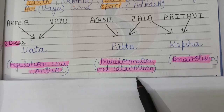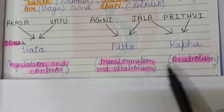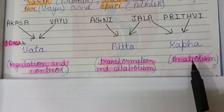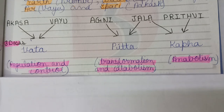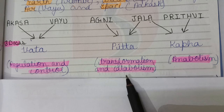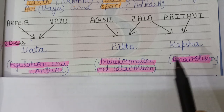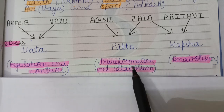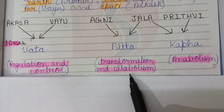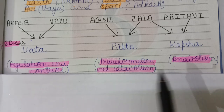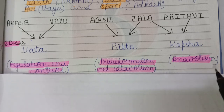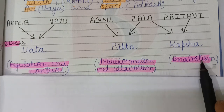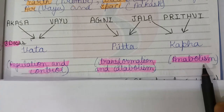Anabolism is the reverse process of catabolism — simpler substances form a complex substance. For example, you take protein in complex form; first it breaks down to amino acids, which is catabolism. Then these amino acids in our body again form a protein present in our body, which is known as anabolism.